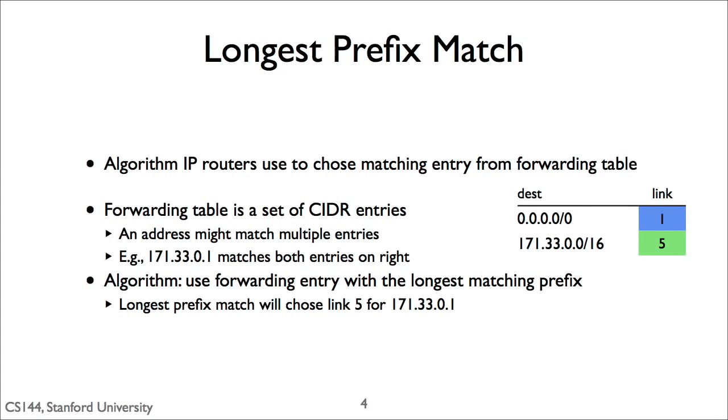By default, all packets will match the top entry and go over link 1. However, if the first 16 bits, or two octets, of the packet destination address matches 171.33, the router will send it over link 5. This is because a 16-bit prefix is a longer prefix than 0 bits. It's more specific.